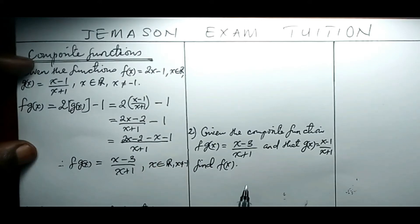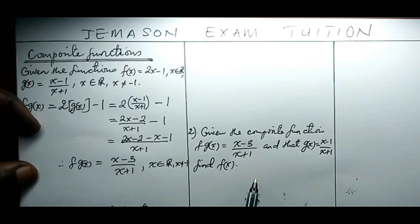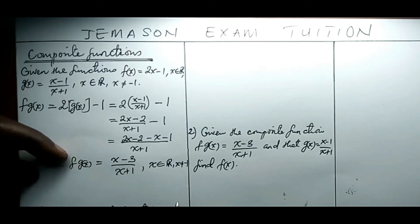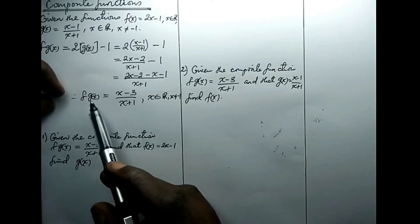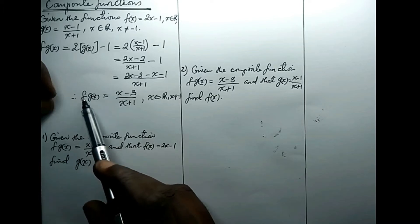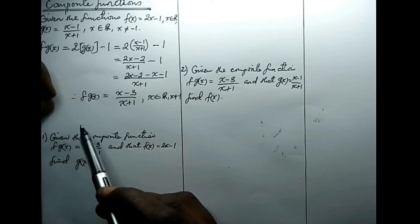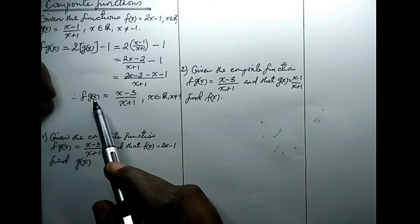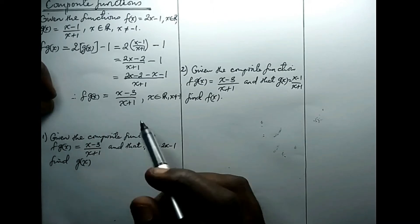Another situation might arise in which they give the composite function and then ask you to find one of the functions in the composition. There are two cases: the case where g of x is given and you are asked to find f, or the case where f is given and you are asked to find g of x. Let's look at the two cases.